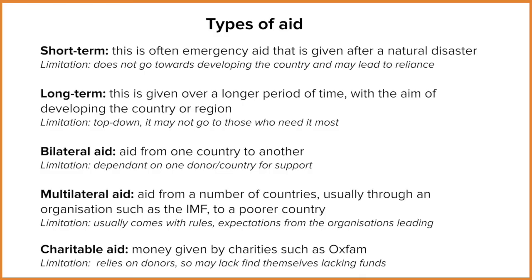The disadvantage with long-term aid is it tends to be top-down, meaning the government or the country giving the aid decides how the money is going to be spent. It won't necessarily help the people of those areas because the government might not know exactly what those people need to develop. There's also bilateral aid, which is where one country helps another on a one-to-one basis. But this ends up relying on one country to supply, and if they cut off the money, that country is left entirely without support.